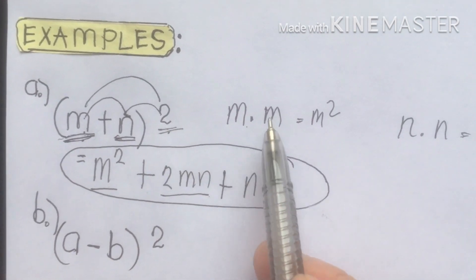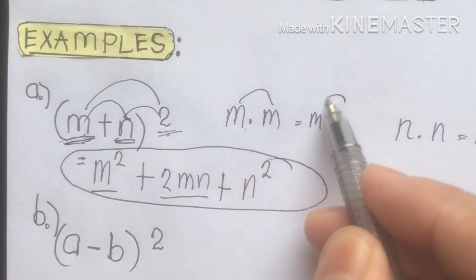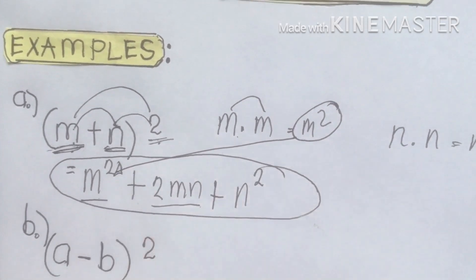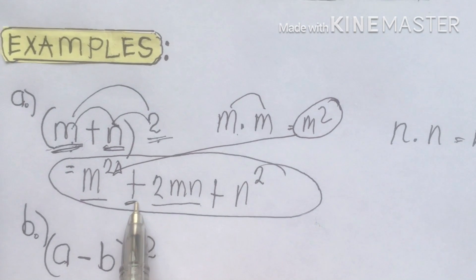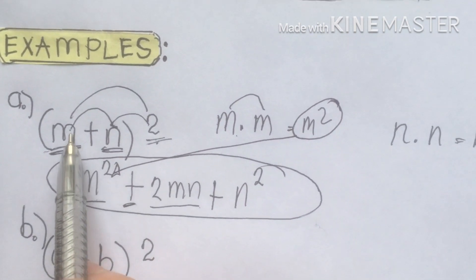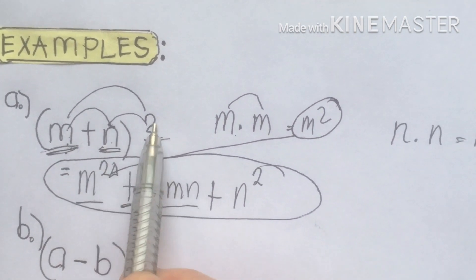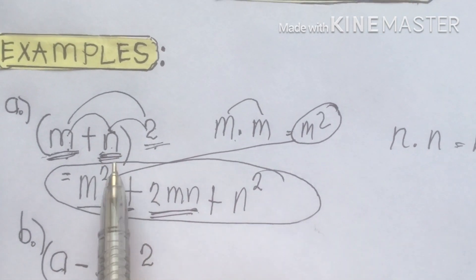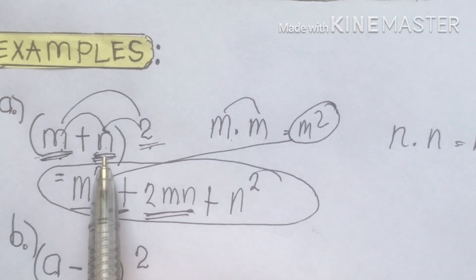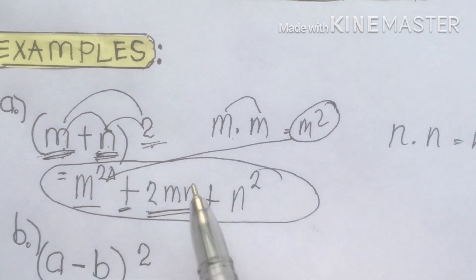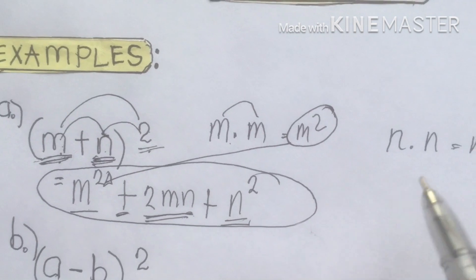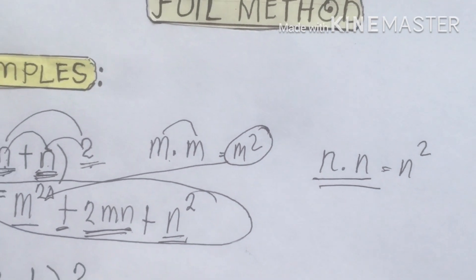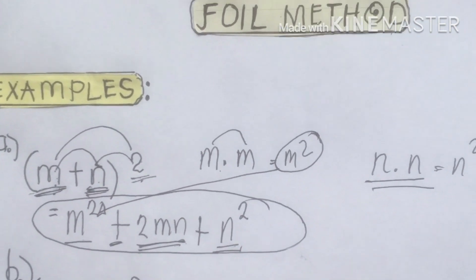Again: multiply for the first term — m times m gives m squared. Then get the product of m and n times 2, we have 2mn. Next, the second term squared: n times n gives n squared. So the answer is m squared plus 2mn plus n squared. That is the procedure and tips on how to solve the square of a binomial using the FOIL method.